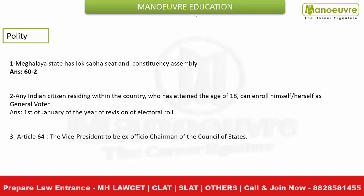Talking about the Polity section, it had some difficult questions. The first question was about Meghalaya's Lok Sabha seats and the number of state assembly constituencies. Many people would not remember the details of particular states, especially northeastern states. The right answer is 60 - 60 is the state assembly seats and 2 is the Lok Sabha seat for Meghalaya.